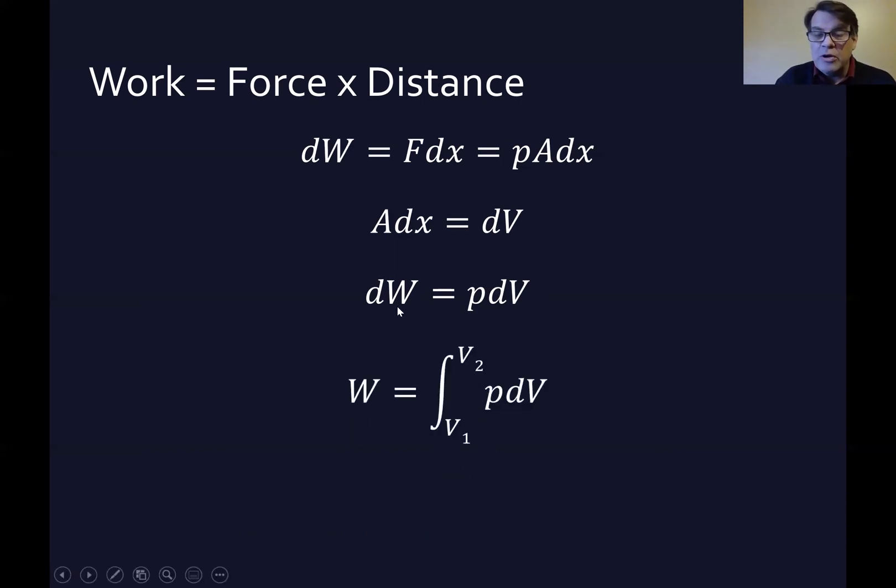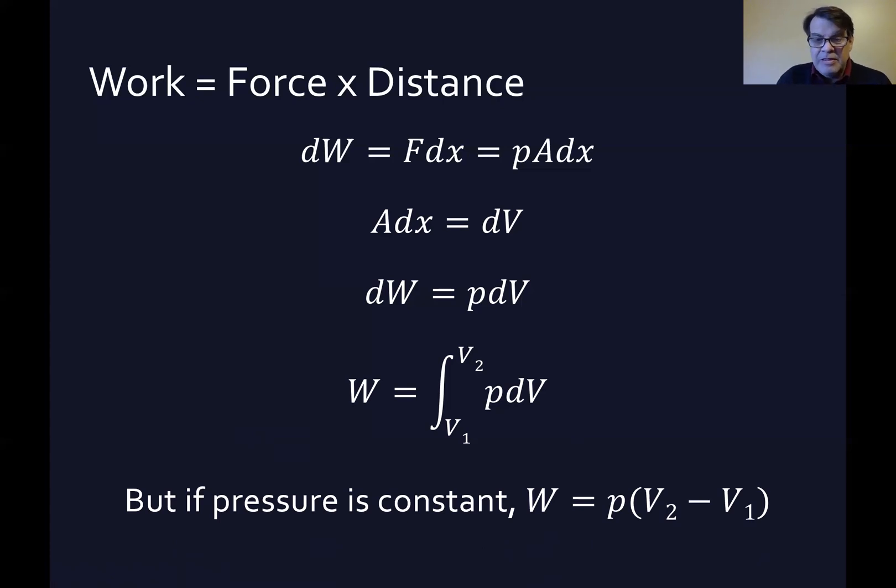So now if I want to know what the work is, I just integrate both sides. And so the integral of dW is W, work, the amount of work done. So it's the integral from V1 to V2 of the pressure times the incremental change in volume. Now, if the pressure is constant, then a constant comes out of an integral. The P comes out. And then we just have V2 minus V1 because the pressure has been constant. So if the pressure is constant, then the work equals the pressure times the ending volume minus the beginning volume.